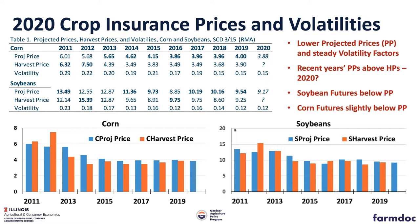Crop insurance is defined very much by projected prices and volatility factors established each year by RMA. This screen shows all the way back to 2011 — the last 10 years of projected prices, the resulting harvest prices, and the volatility. The projected price for corn is the average during February of the December futures contract, and for soybeans, the November contract averaged during the month of February.